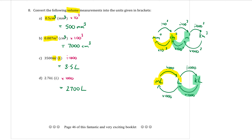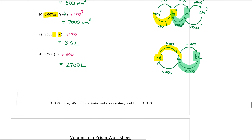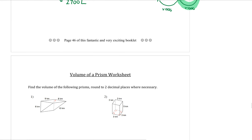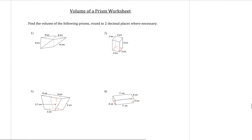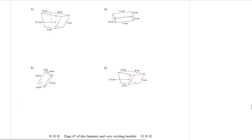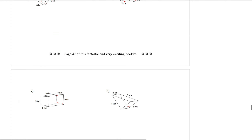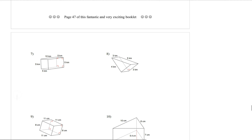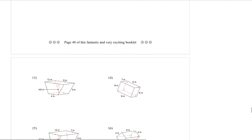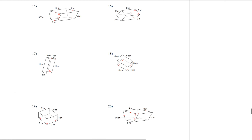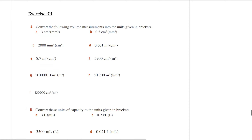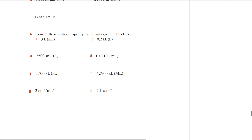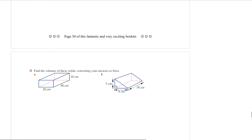Now it's your turn to practise. On the next page, page 47, find the volume of a prism just like shown in the examples. Pages 47 and 48, and also exercise 6H — some of those questions as well.